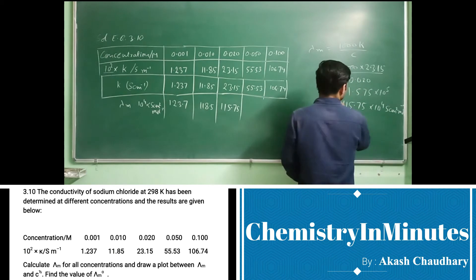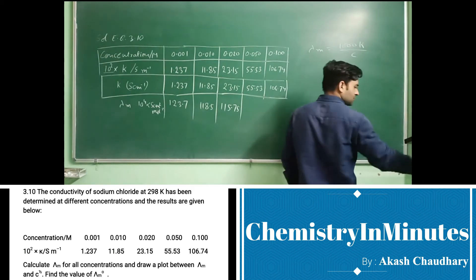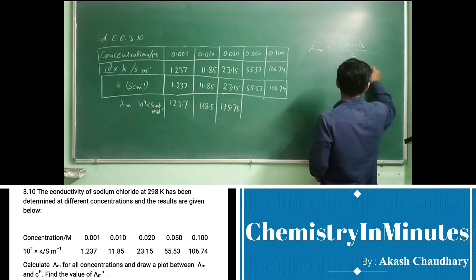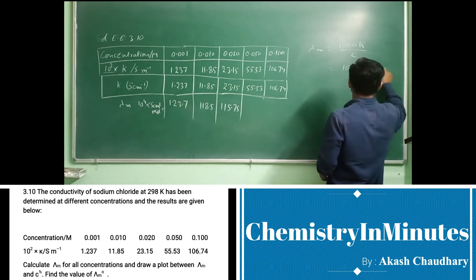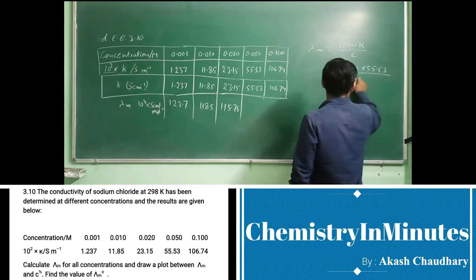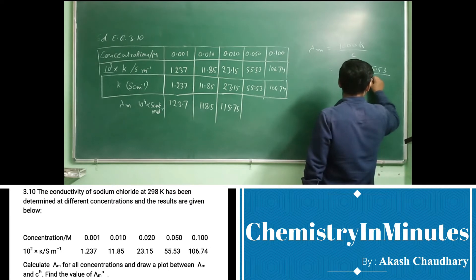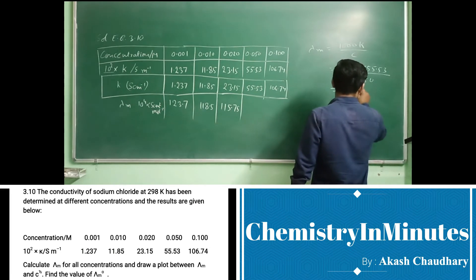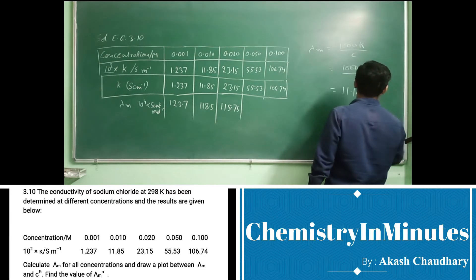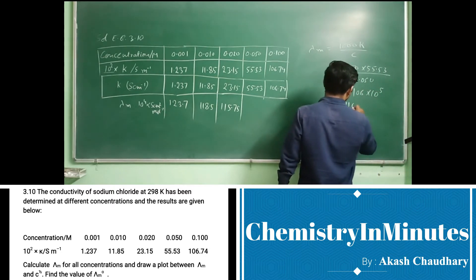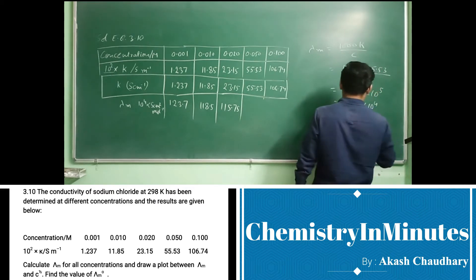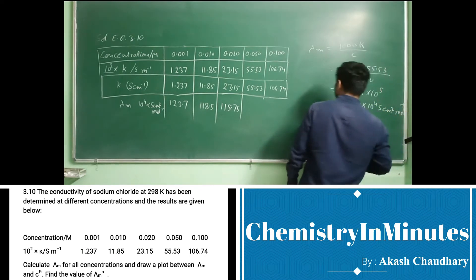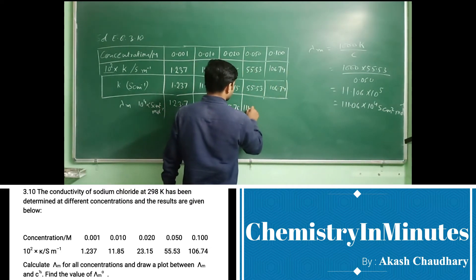For the fourth set of values, lambda m equals 1000 times k, where k is 55.53, divided by c which is 0.050. Solving this gives 11.106 times 10 to the power 5, or 111.06 times 10 to the power 4 siemens centimeter squared per mole. So we write 111.06 in this column.